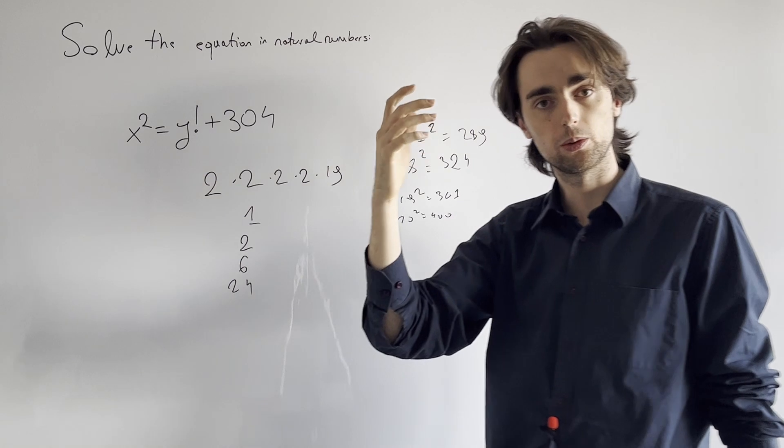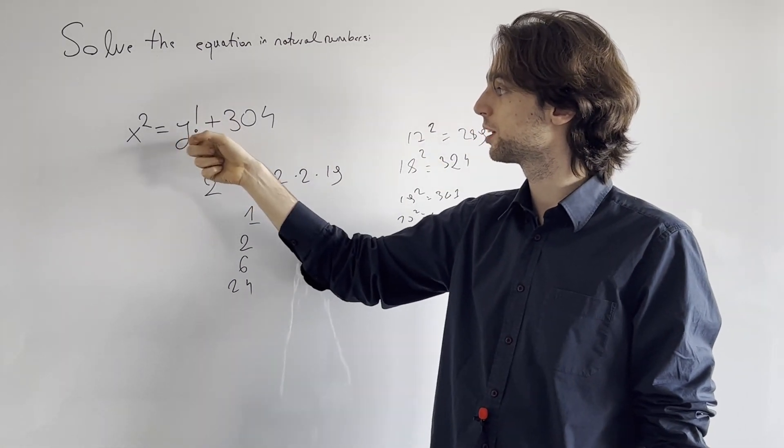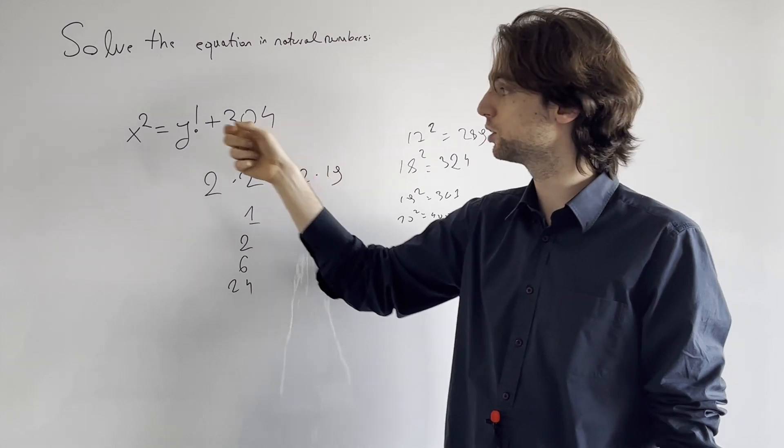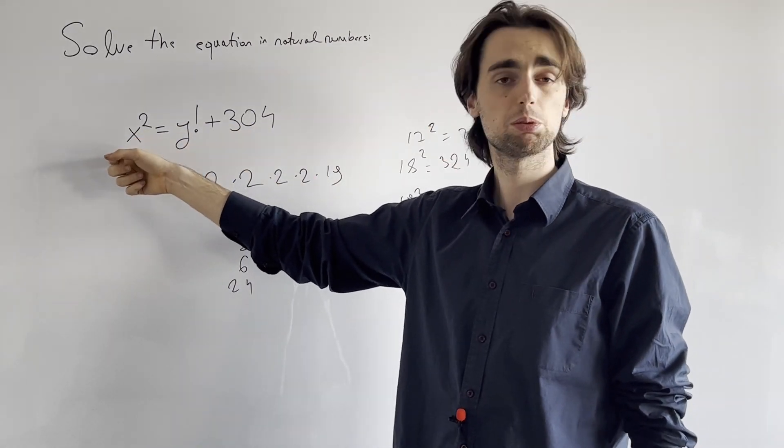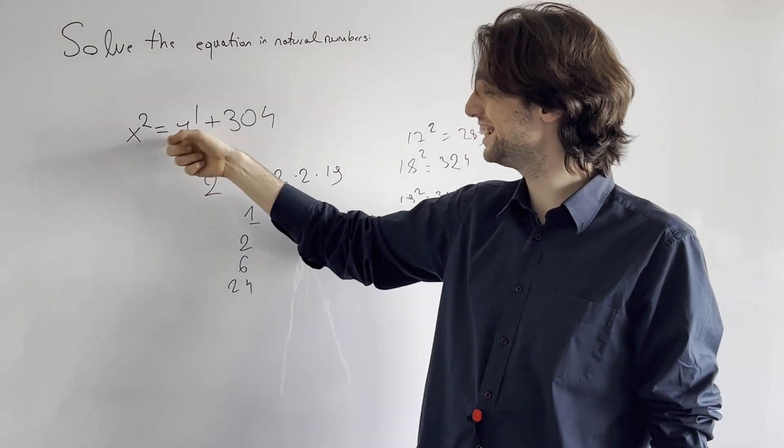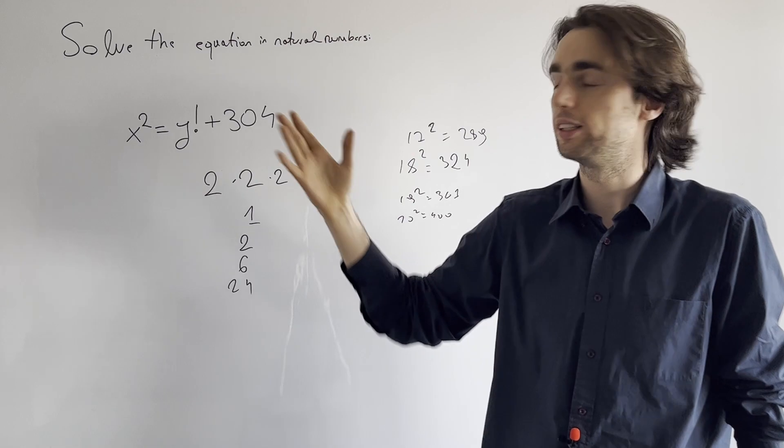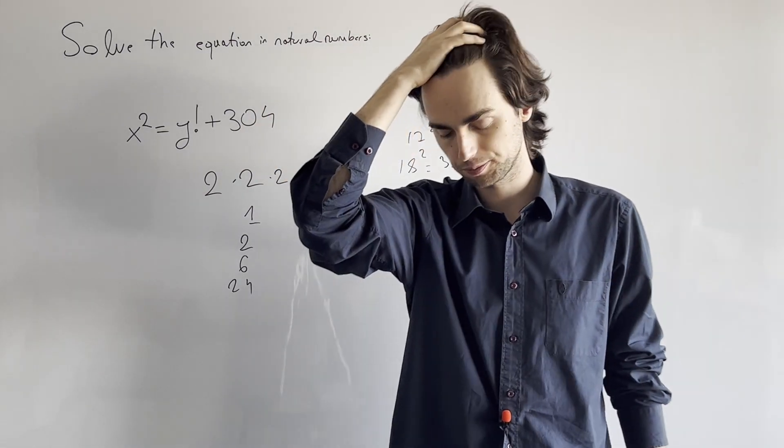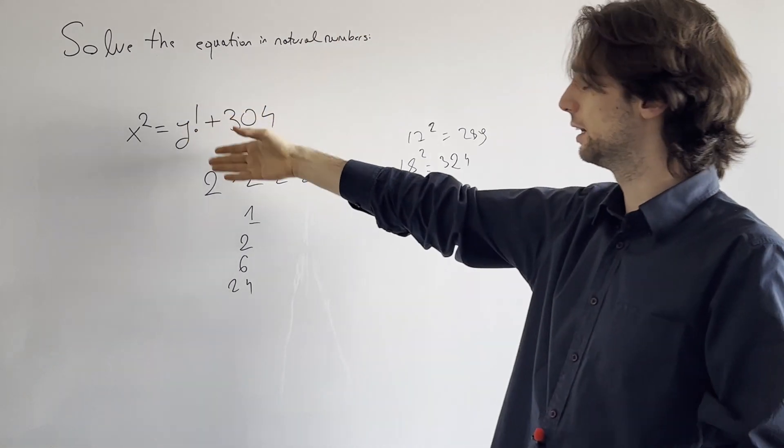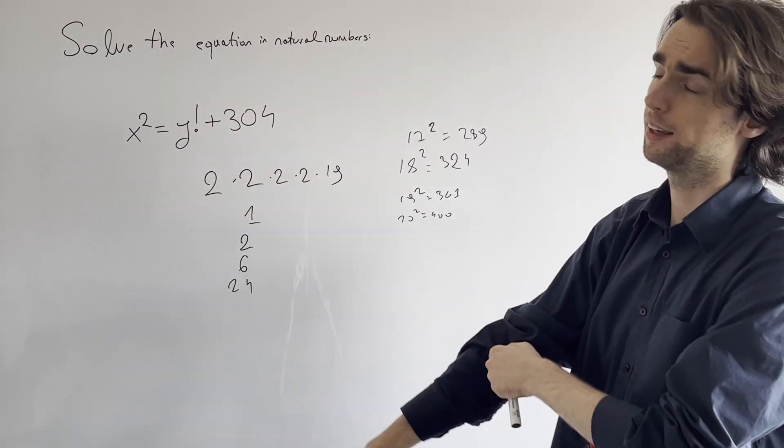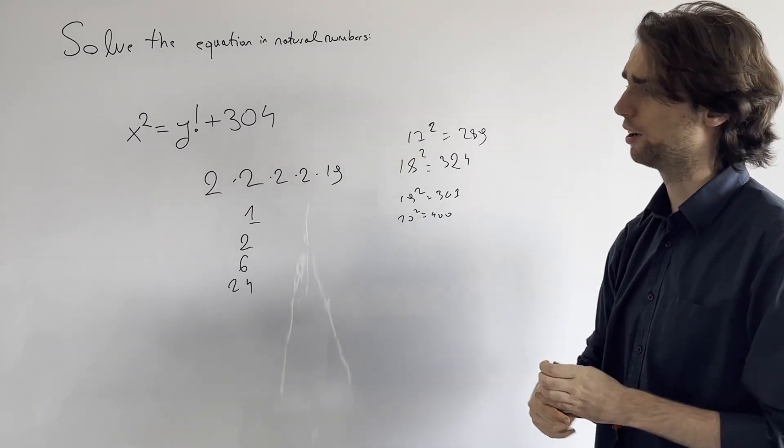If y was greater than or equals 38, then this would be divisible by 19 squared. This would be divisible by 19. So x would be divisible by 19. But then x squared would be divisible by 19 squared. And because this is divisible by 19 squared, then this would also have to be divisible by that. And that's a horrible estimate. We cannot really check that in a reasonable amount of time.